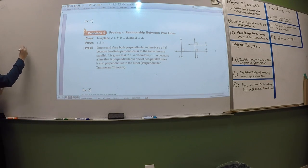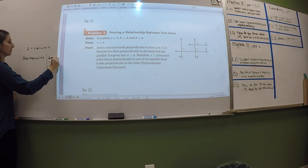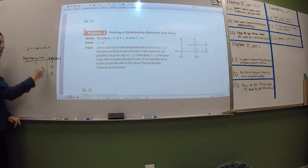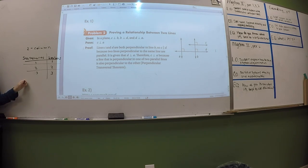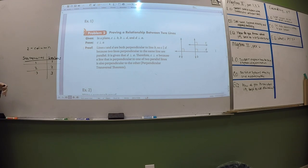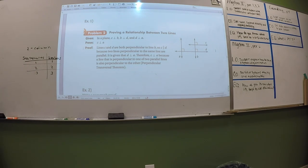Let's review proof formats. Two-column proofs have statements and reasons — every statement has a reason, they're paired up and lined up. You don't say something unless you can give a reason. Your first statement is always the given, and your last statement is always what you're trying to prove. Flow proofs work the same way but flow from given through intermediate steps to the conclusion, and they tend to be more fill-in-the-blank style. Paragraph proofs work similarly, but instead of separate columns you write it out with 'because' connecting statements to their reasons.